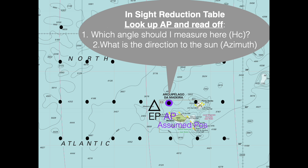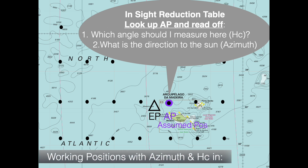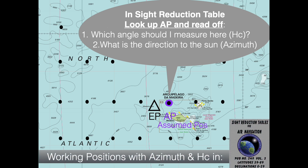That is called the HC, the calculated altitude. And secondly, what's the direction of the sun — the azimuth. But the problem is how to choose this assumed position, because only for these working positions is the azimuth and the altitude found in the sight reduction table.